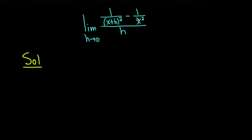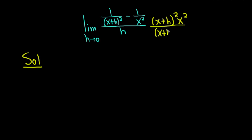We're going to start by multiplying by 1 in a really clever way. In order to get rid of (x+h) squared, we can multiply by (x+h) squared. And in order to get rid of x squared, we can multiply by x squared. Since we can't just multiply by that, we also divide by it. So we multiply and divide by (x+h)² · x², which is multiplying by 1 in a super clever way.